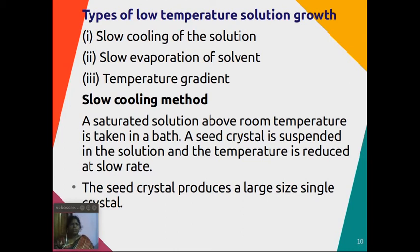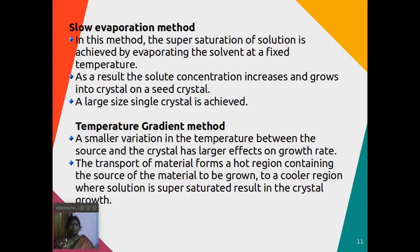In the slow cooling method, a saturated solution above room temperature is taken in a bath and a seed crystal is suspended in the solution. The temperature is then reduced at a very low rate, and the seed crystal produces large single crystals as a result.